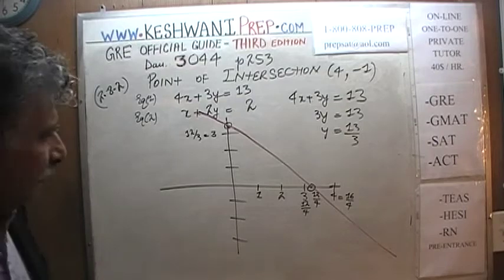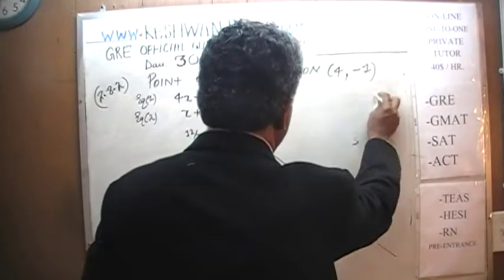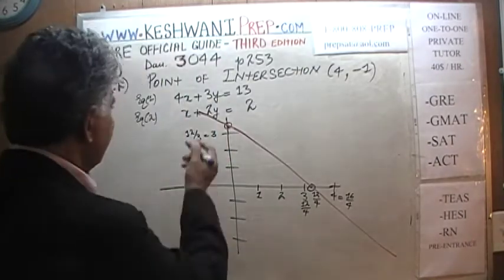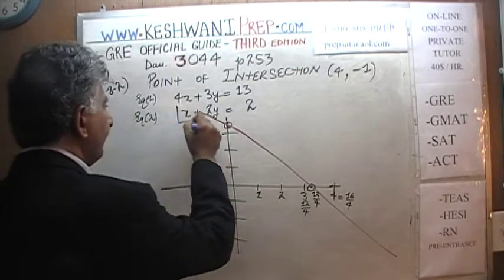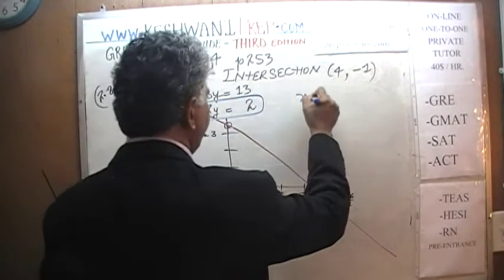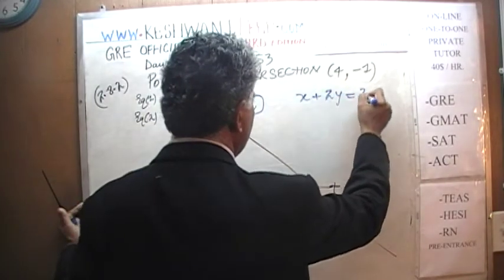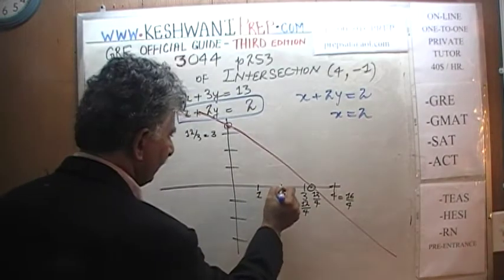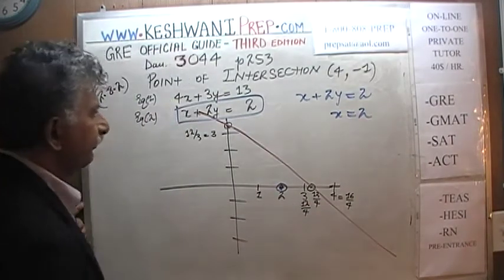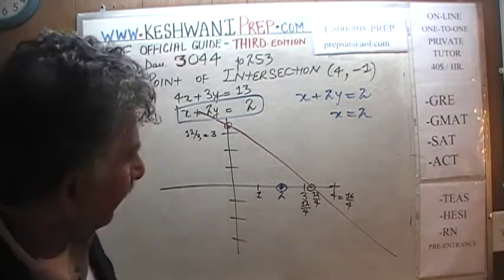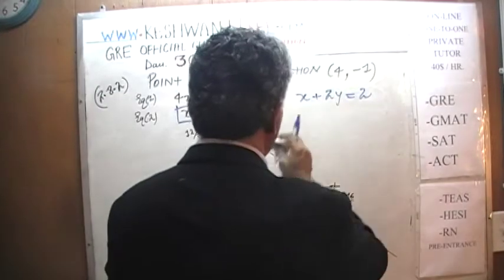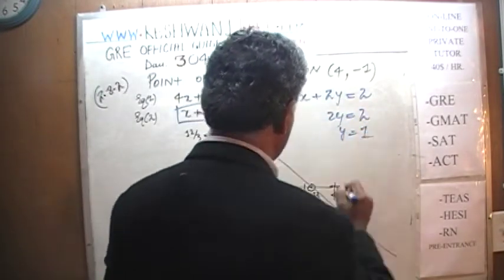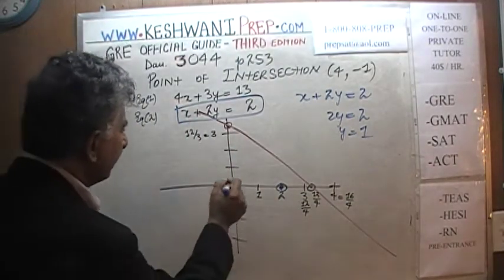Let's work on the second line in a different color. The second equation is x plus 2y equals 2. When y is equal to 0, x equals 2 — that's right here on the x-axis. When x is equal to 0, 2y equals 2, which means y equals 1. That's right here on the y-axis. This one is quite straightforward.